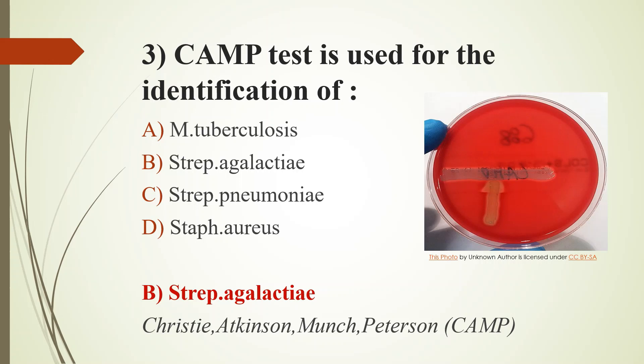In CAMP test, the group B streptococcus are streaked perpendicular to a streak of Staphylococcus aureus on sheep blood agar. A positive reaction appears as an arrowhead zone of hemolysis adjacent to the place where the two streak lines come into proximity.